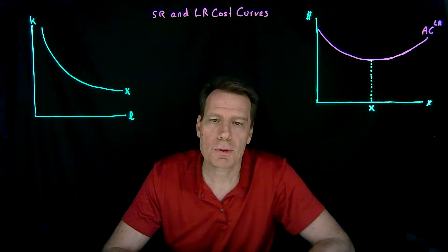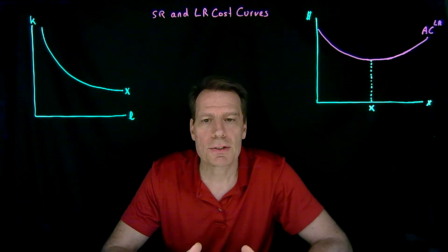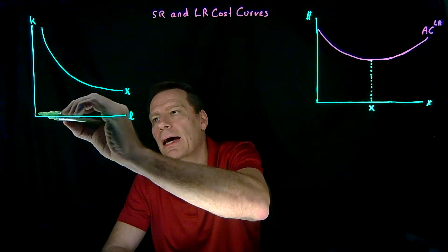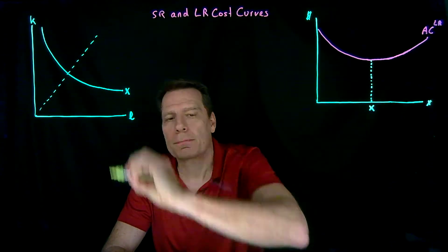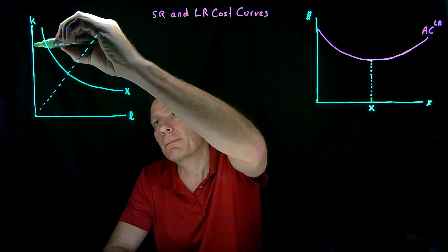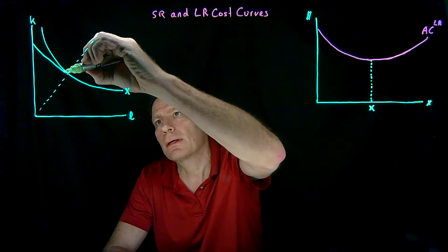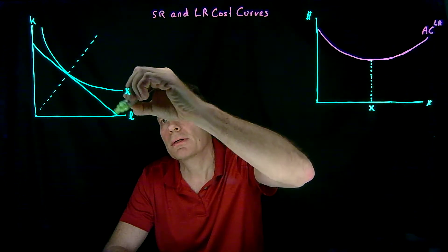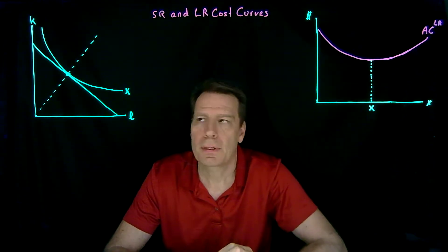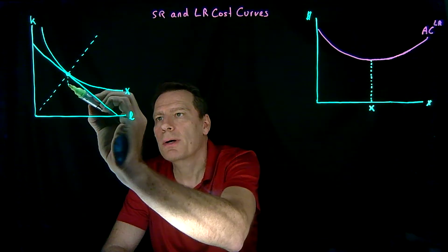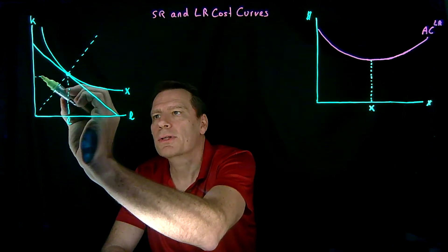Now if the firm has had time to adjust its labor and capital, it will have adjusted to an input bundle that lies on the cost-minimizing ray. In other words, it will be located at a tangency between the isocost budget and the isoquant, and it will have chosen this much labor and this much capital.